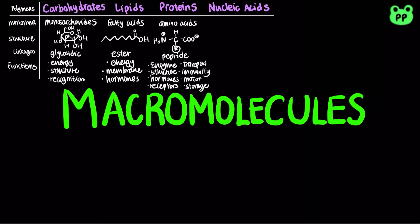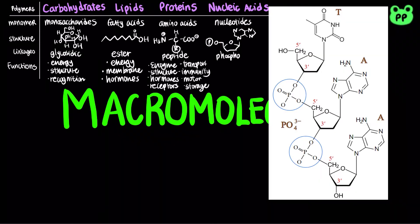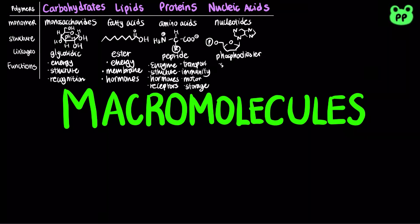The last type of macromolecules, called nucleic acids, are made up of monomers called nucleotides. Each nucleotide consists of a nitrogenous base, a pentose sugar, and a phosphate group. Nucleotides are linked by phosphodiester bonds. Nucleic acid functions in the storage of genetic information, structural support, and catalysis.